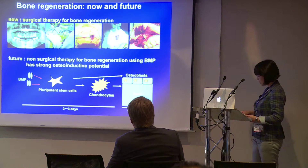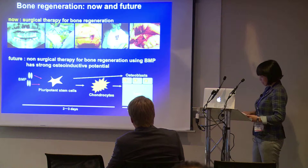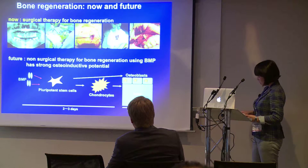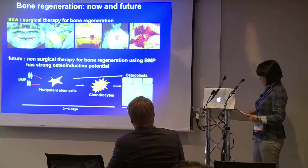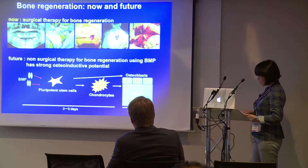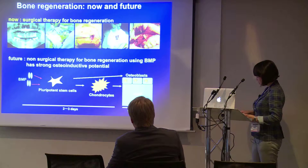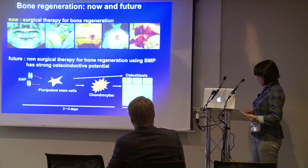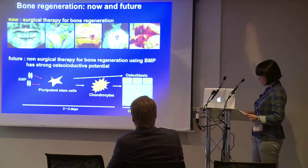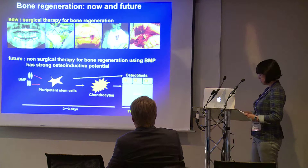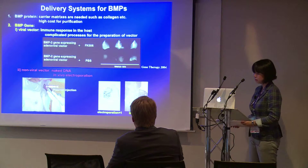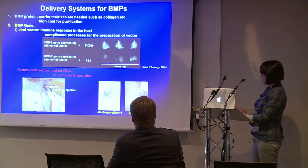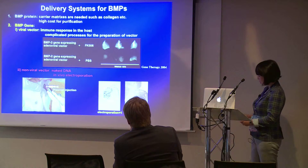For this purpose, we paid attention to BMP, which has a strong ability for bone induction as you well know. This slide shows the sequence of bone induction by BMP. Generally two or three days after BMP treatment, undifferentiated cells develop into chondrocytes. After two weeks, bone formation occurs in the process of endochondral ossification, and intramembranous ossification also occurs.